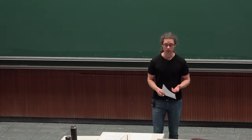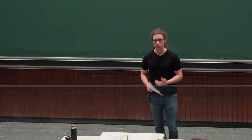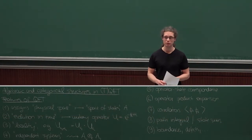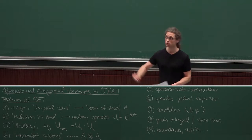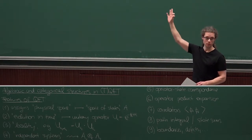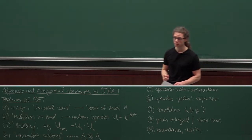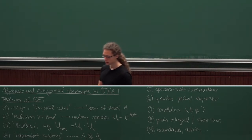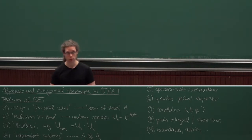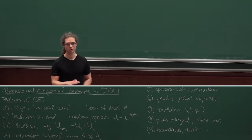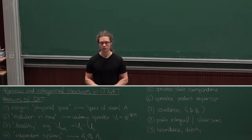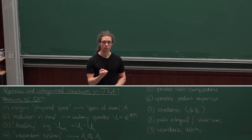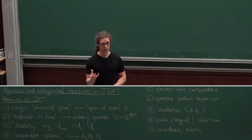So far we've seen what a category is, what functors between categories are, and we saw some examples. I tried to give motivation why we're doing this in this lecture course, to get closer to understanding topological quantum field theories in lower dimensions, namely two spacetime dimensions. We need to consider more interesting categories — not very general categories, but those which have extra structure.